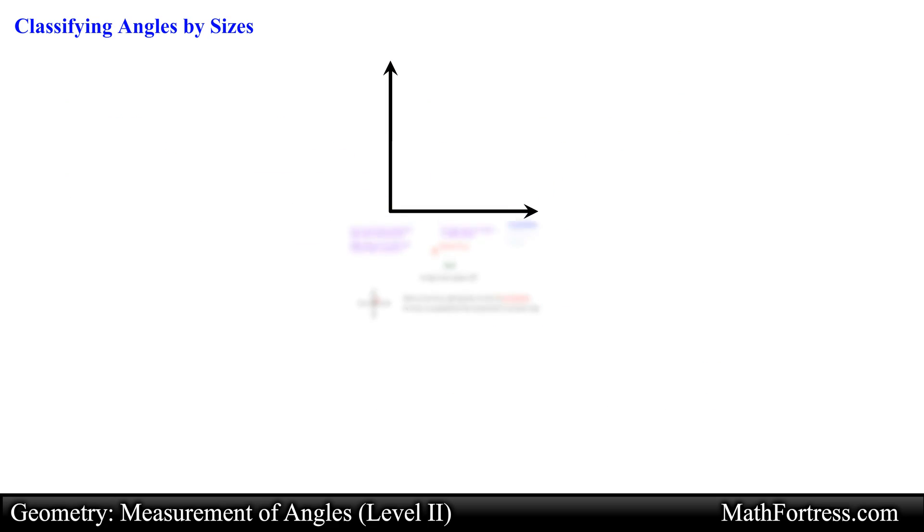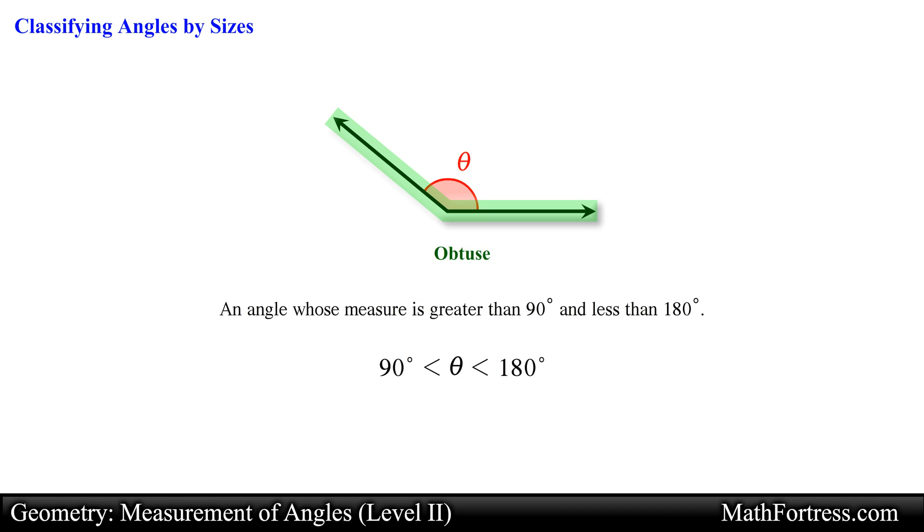Let's take a look at the third type of angle. An obtuse angle is an angle whose measure is greater than 90 degrees and less than 180 degrees. The angle shown can be classified as an obtuse angle. The word obtuse comes from the Latin word obtusus, which means blunt. You can think of an obtuse angle as an angle that is greater than a quarter revolution around a circle and less than half a revolution around a circle.